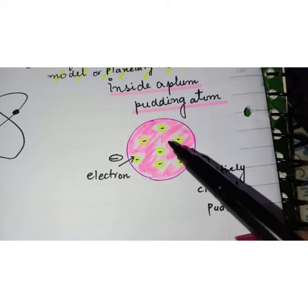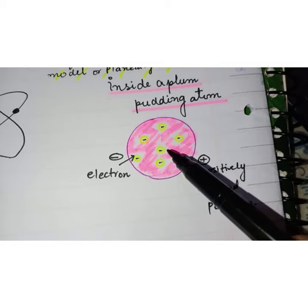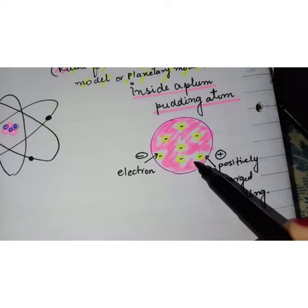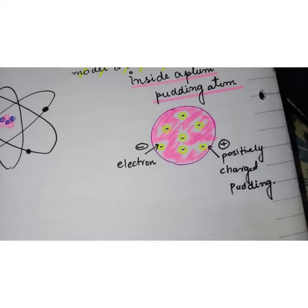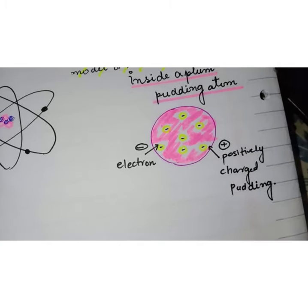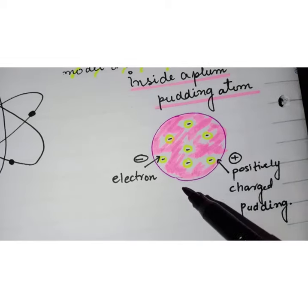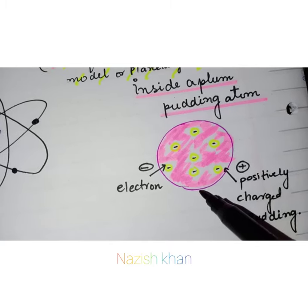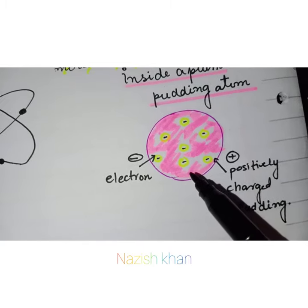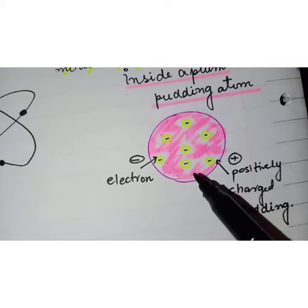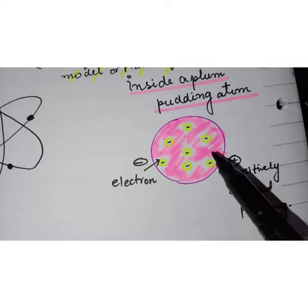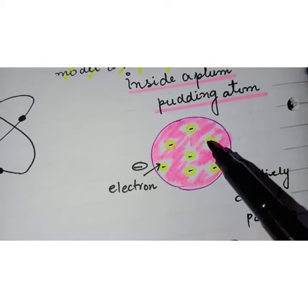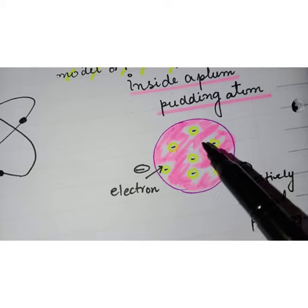He postulated that atoms are solid structures of positively charged spheres with tiny negative particles stuck inside, like plums in pudding. You can also imagine a blueberry muffin where the blueberries are randomly stuck in the dough. That is what scientists thought the atom looked like at a very small scale.